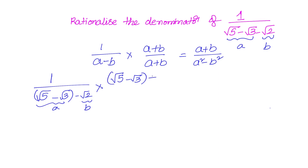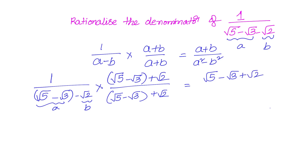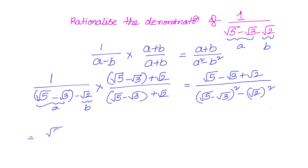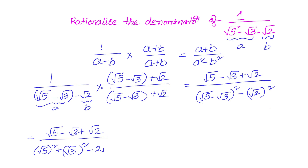Multiplying gives (√5 − √3 + √2) divided by (√5 − √3 + √2). In the numerator we simply write √5 − √3 + √2. In the denominator we apply a² − b², where a = (√5 − √3) and b = √2. So the denominator becomes (√5 − √3)² minus (√2)². Expanding (√5 − √3)² using the formula x² + y² − 2xy gives 5 + 3 − 2√15.